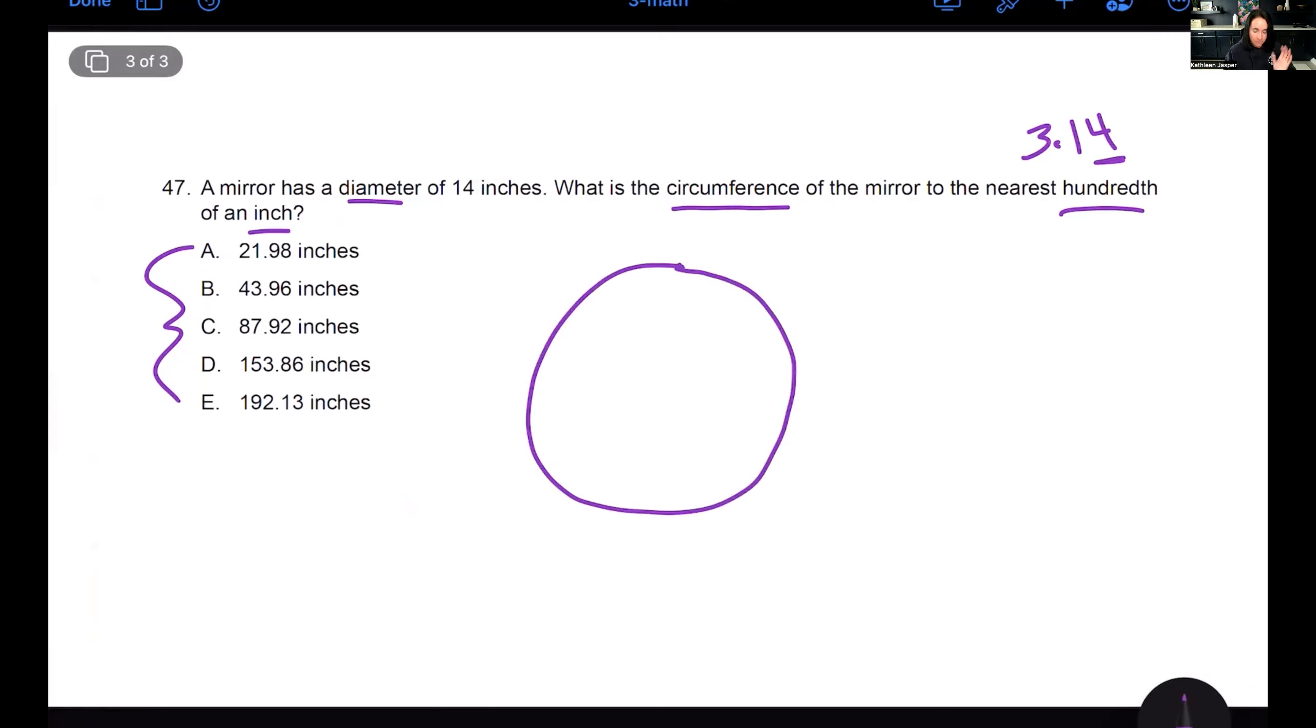I have a mirror has a diameter of 14 inches. What is the circumference of the mirror to the nearest hundredth of an inch? They do that hundredth of an inch because we're going to be using 3.14 for pi. And notice that the four is at the hundredth. So let's take a look. First, I'm going to draw the circle. That is not a very good circle, but it'll have to do. Now the diameter is the line that runs directly through the center of the circle. So here's the center, runs directly through the center, and the diameter is 14 inches.